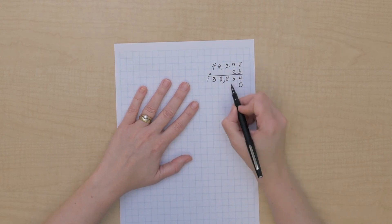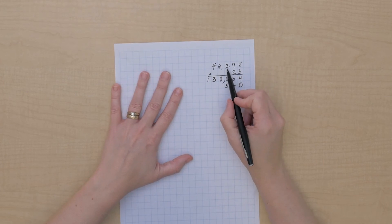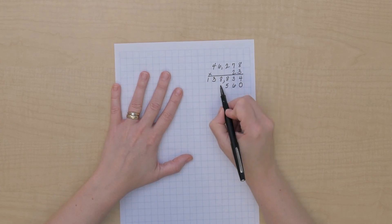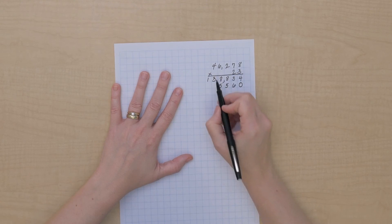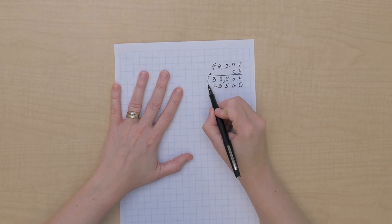8 times 2 is 16. I'll remember the 1. 7 times 2 is 14 plus the 1 is 15. I'll remember 1 again. 2 times 2 is 4 plus the 1 is 5. 6 times 2 is 12. I'll remember that 1. And 4 times 2 is 8 plus the 1 is 9.